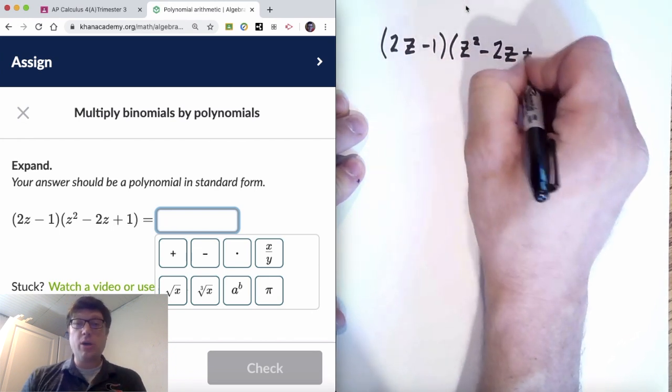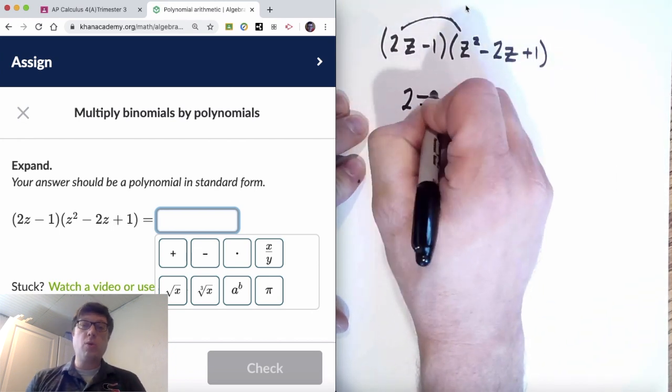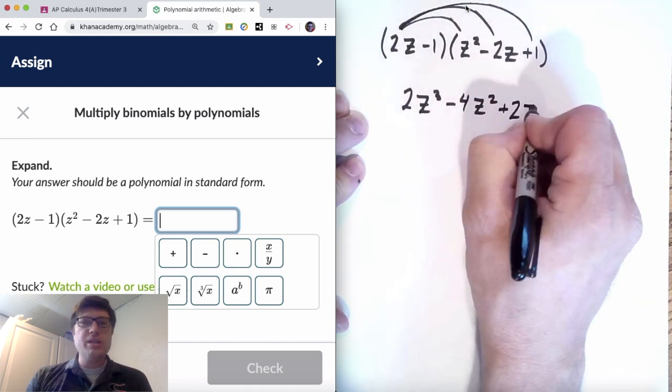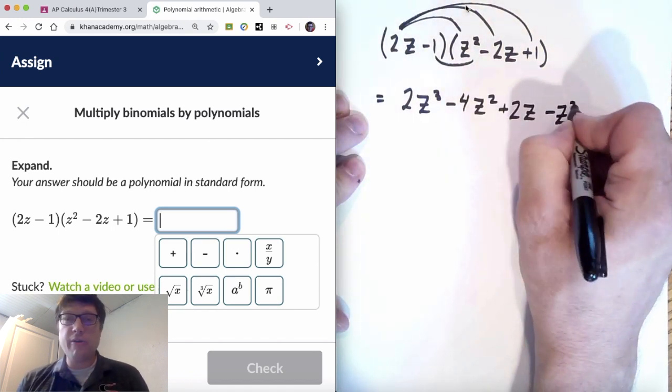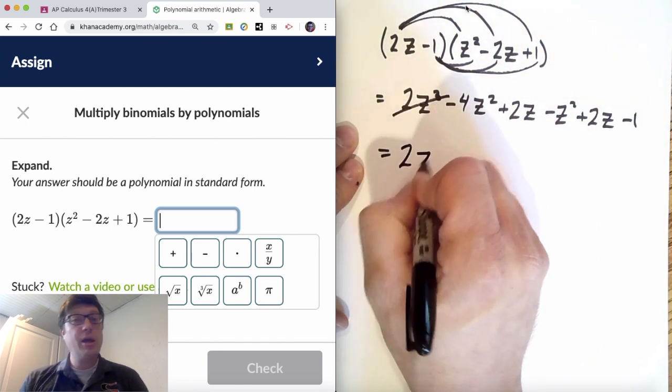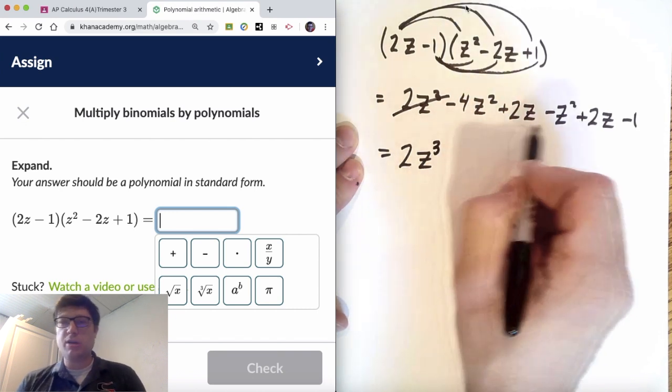You can see my expression. I've got the quantity 2z minus 1 multiplied by quantity z squared minus 2z plus 1. I'm just using that rainbow method distribution process to take care of multiplying 2z from the first group of parentheses times everything on the other set of parentheses and negative 1 times everything on the other set of parentheses.